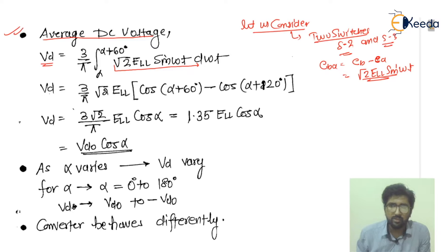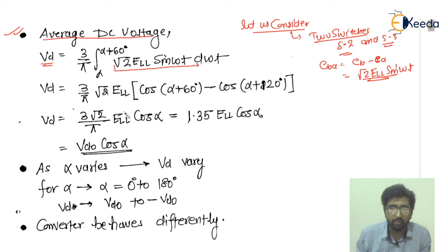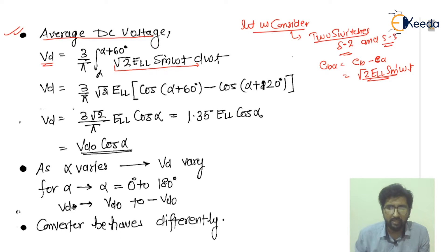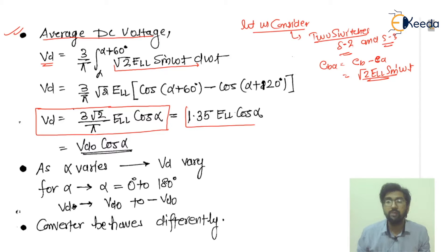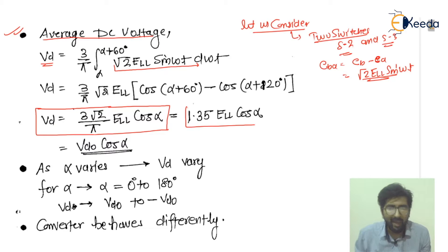After simplification, we get (3/π) × root 2 · ELL. Since root 2 · ELL is a constant, it comes out of the integral. After the complete simplification and substituting the limits, we get the equation: VD = 3√2 · ELL · cos α. This can also be written as (3√2/π) × ELL × cos α, which equals 1.35 · ELL · cos α.